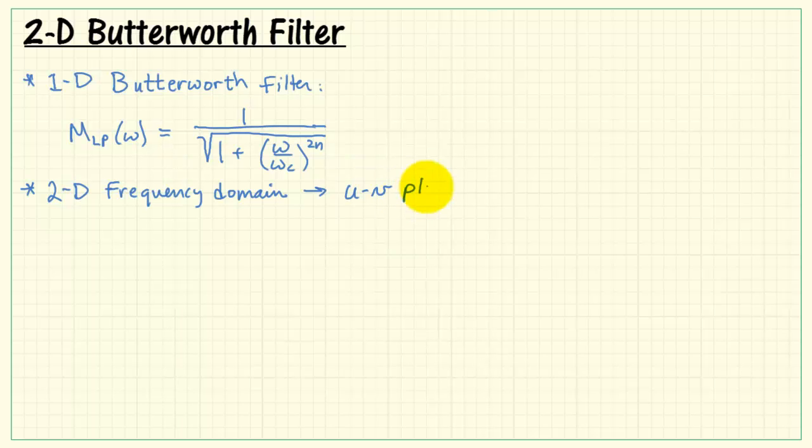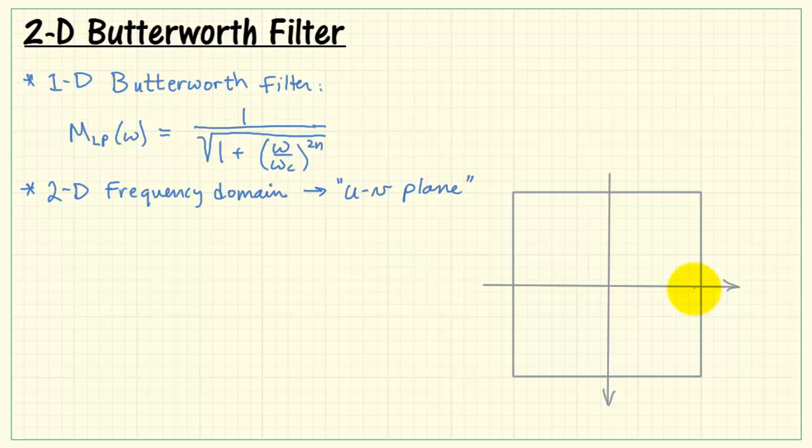In the two-dimensional frequency domain, or what we call the UV plane, sketch that in so we can see what that looks like. Here's the U-axis, and here's the V-axis.